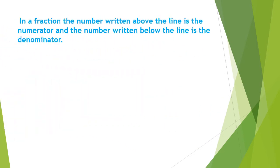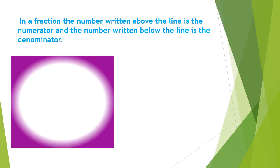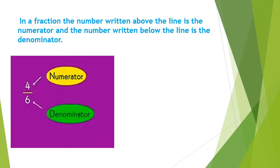In a fraction, the number written above the line is the numerator and the number written below the line is the denominator. See this example: 4 upon 6. So 4 is written above the line, so it is the numerator, and 6 is written below the line, so it is the denominator.